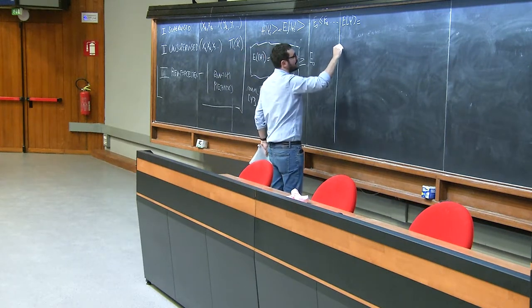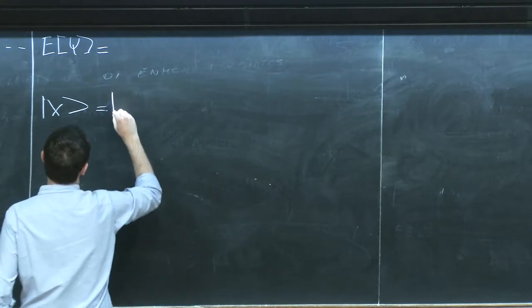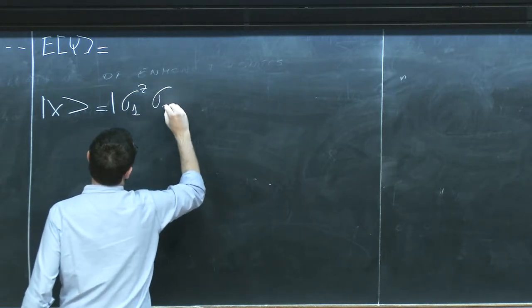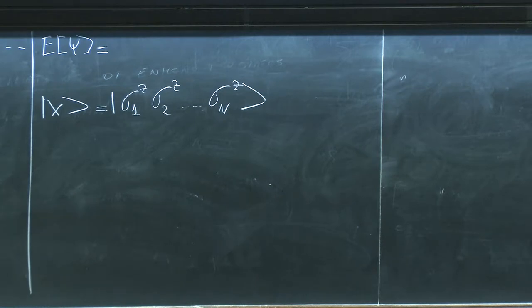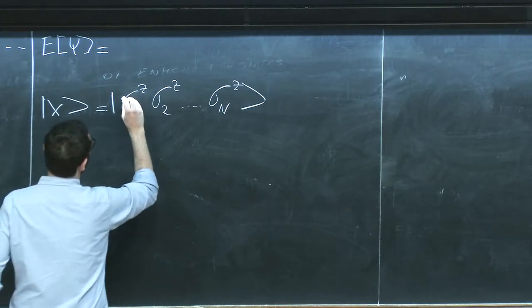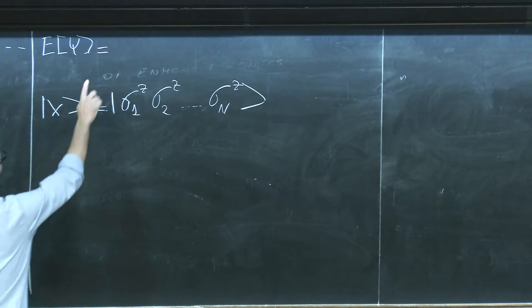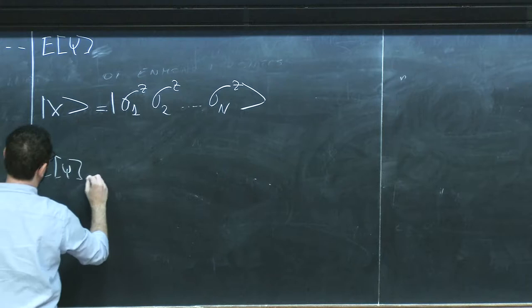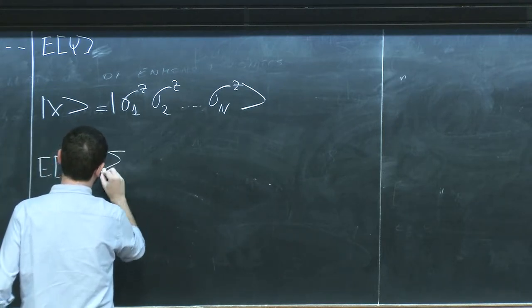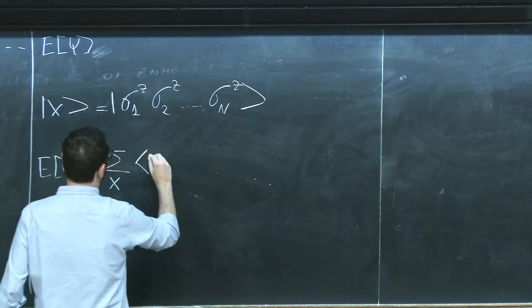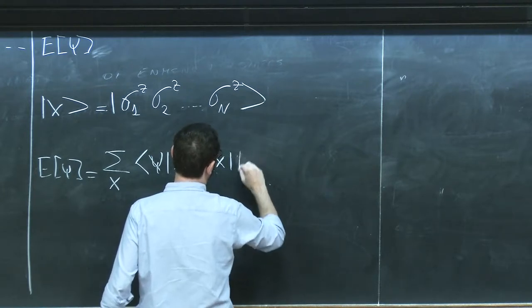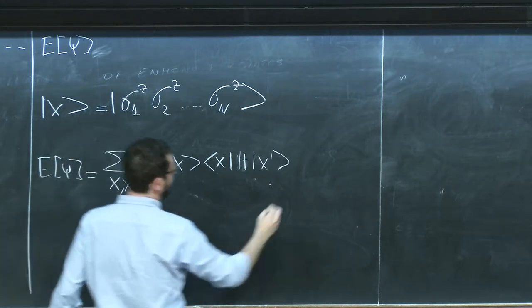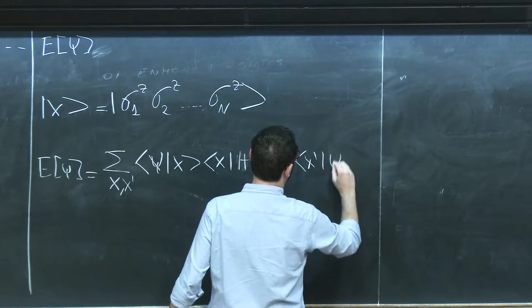People in the 60s realized this can be done stochastically. If my system is spanned by many-body basis states X — for example, the spin projections of a spin-1/2 system with n spins — I can write the expectation value of the energy by inserting completeness: it becomes a sum over X and X' of ψ(X)* ⟨X|H|X'⟩ ψ(X') divided by the normalization.